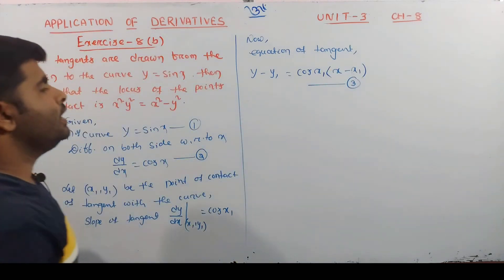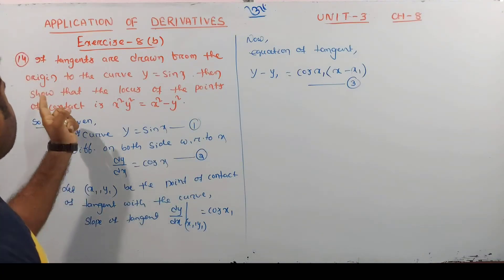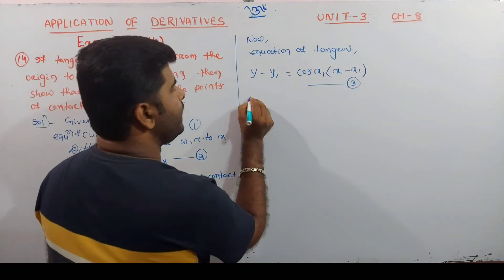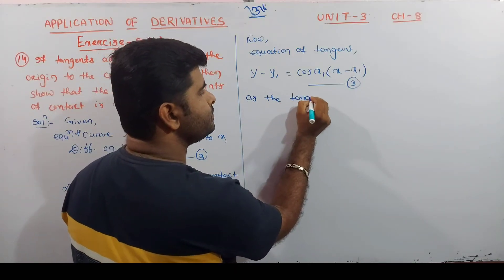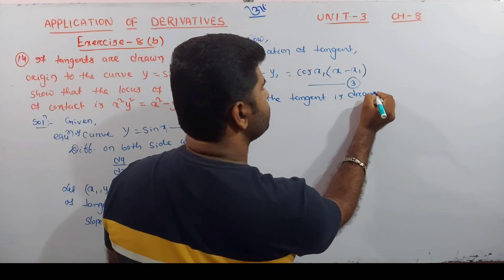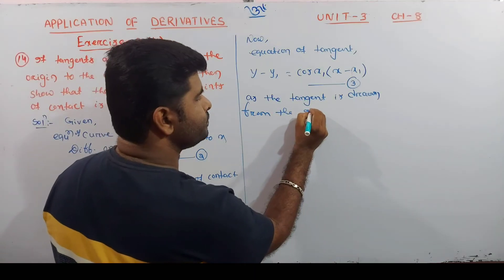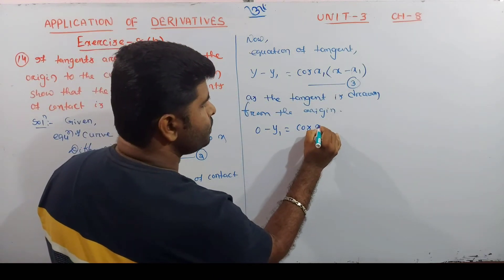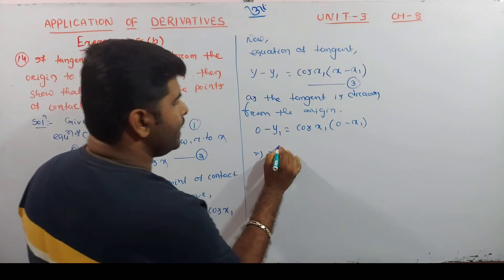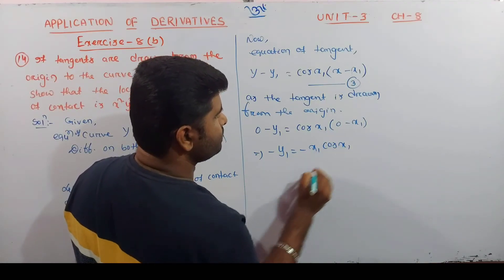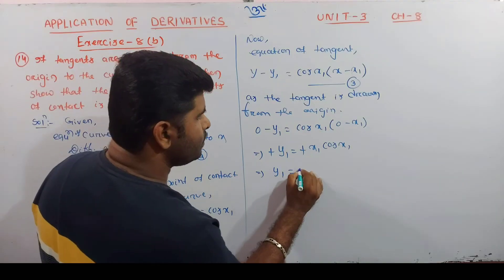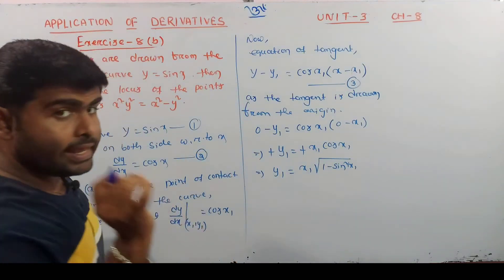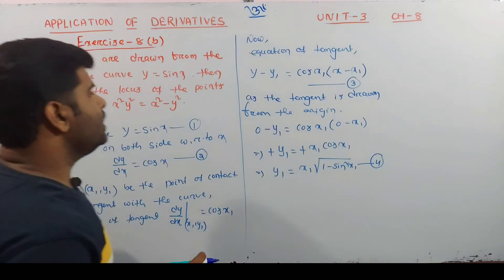Since the tangent is drawn from the origin, the point (0, 0) lies on the tangent. Substituting: 0 - y1 = cos x1 × (0 - x1). So -y1 = -x1·cos x1, which gives y1 = x1·cos x1.